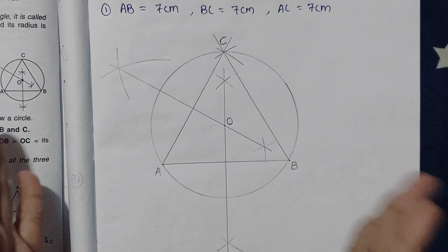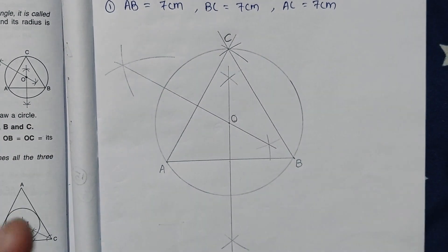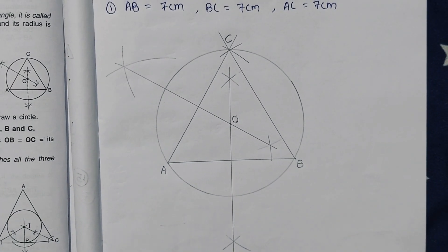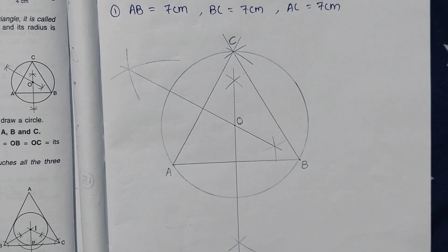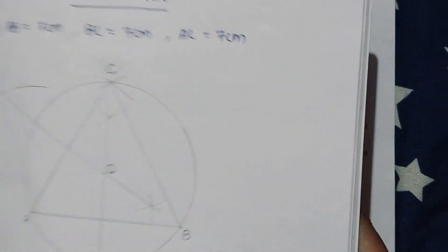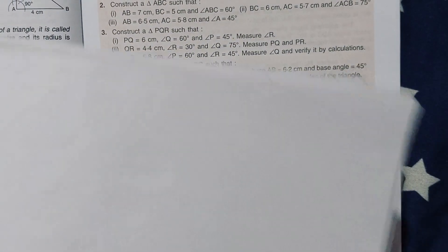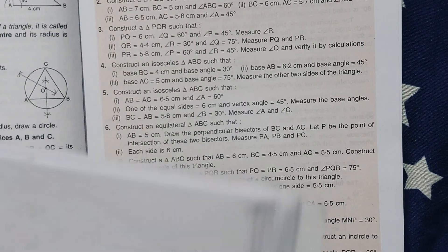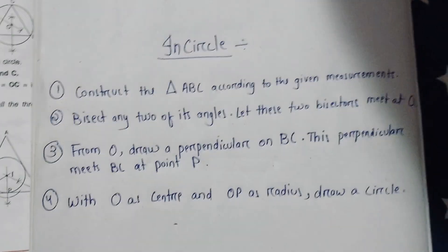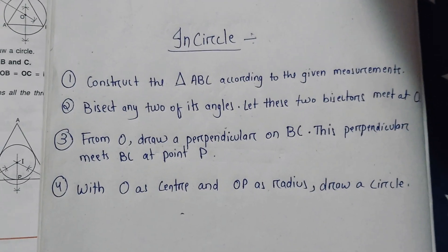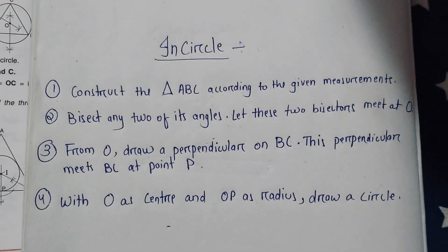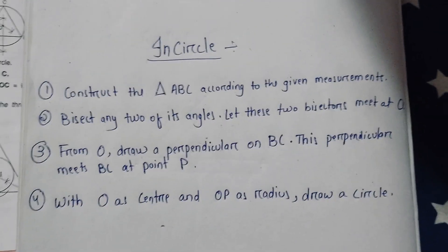I have drawn it for an equilateral triangle, but it works for any triangle. Now let's move on to the incircle. We will see how to draw the incircle of a triangle. The first rule is the same: construct triangle ABC according to the given measurement.